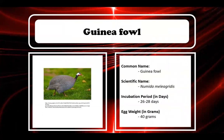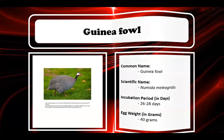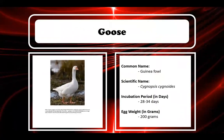Guinea fowl: scientific name Numida meleagridis, incubation period 26 to 28 days, egg weight 40 grams. Next, goose: scientific name Cygnopsis cygnoides, incubation period 28 to 34 days, egg weight 200 grams.